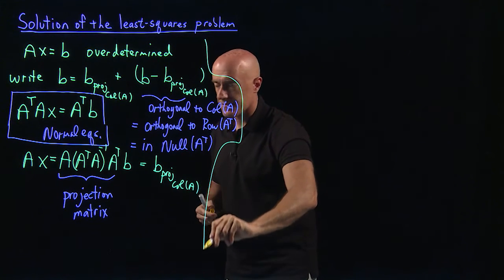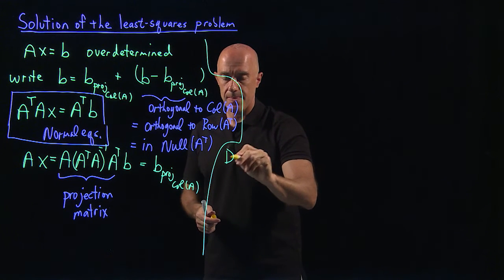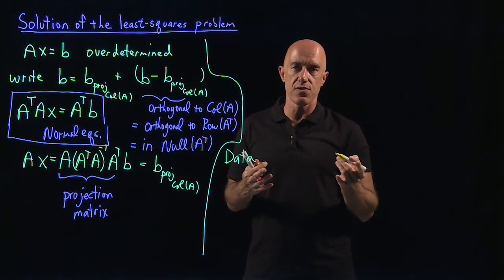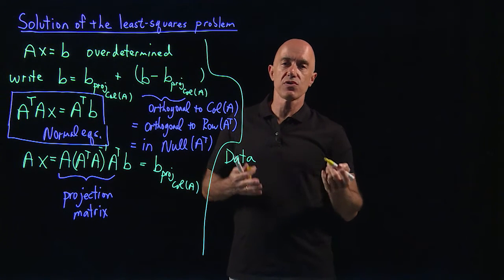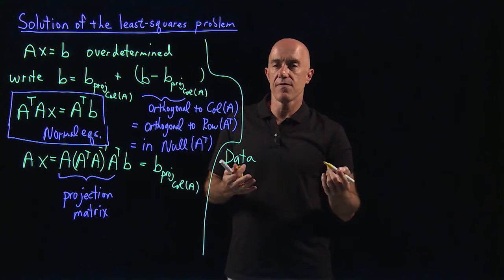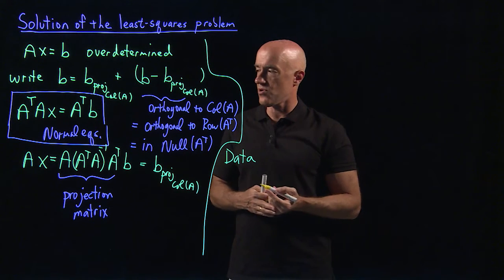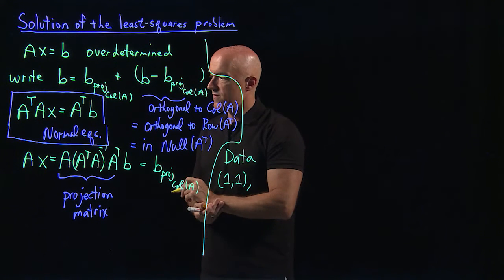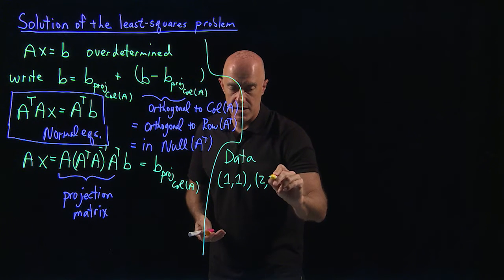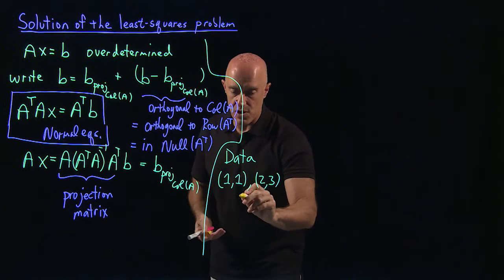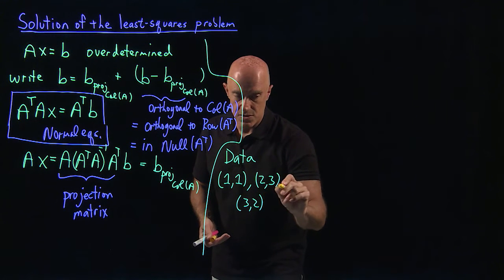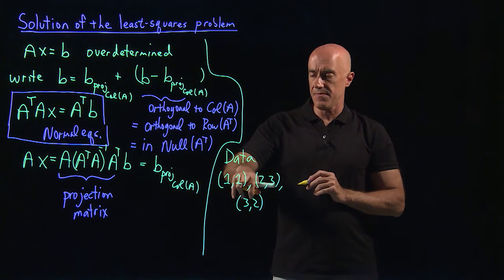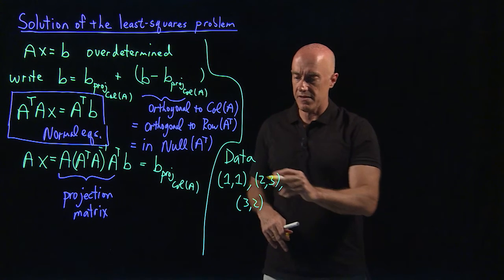Let's look at a toy problem — one I can work on the board. We have three data points. You know that you can always draw a line through two points, but if you have three points and they're not collinear you can't draw a line. So our three data points are: (1, 1), (2, 3), and (3, 2).